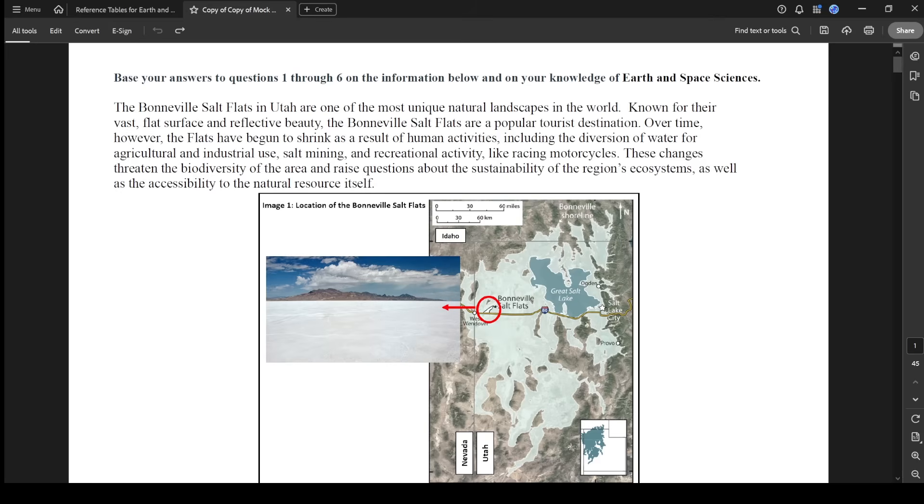It says base your answers to one through six on the information below and on your knowledge of Earth and Space Science. There's salt flats in Utah, one of the most unique landscapes in the world known for their vast flat surface and reflective beauty. So I'm just going to start underlining some stuff. Salt flats. They're flat. They're a popular tourist destination.